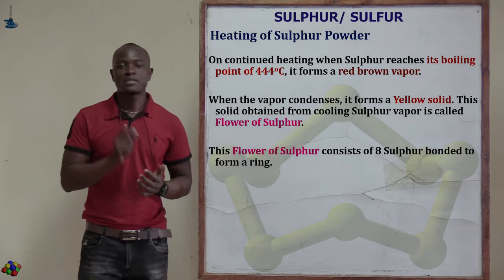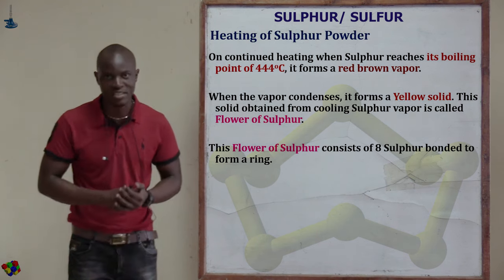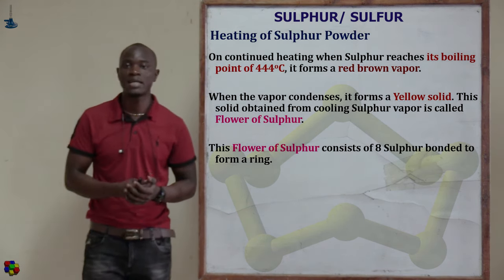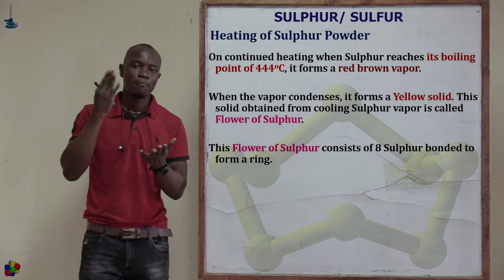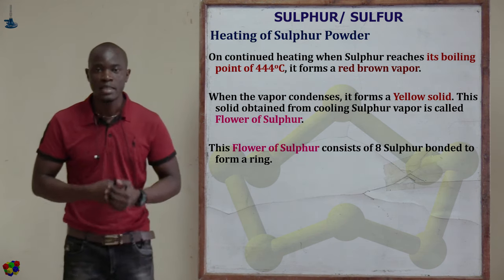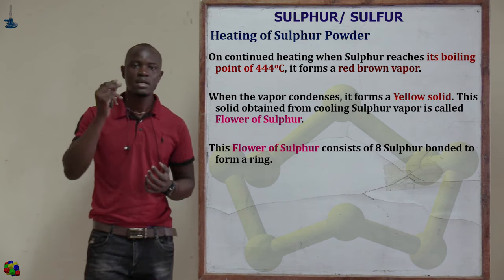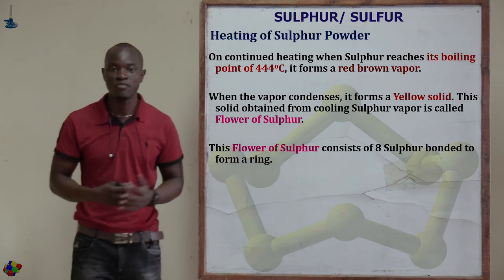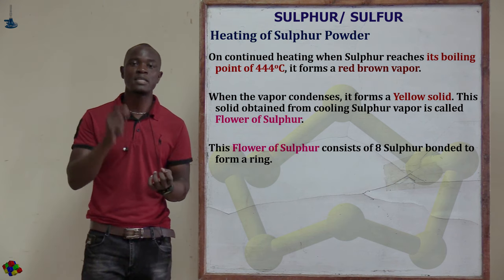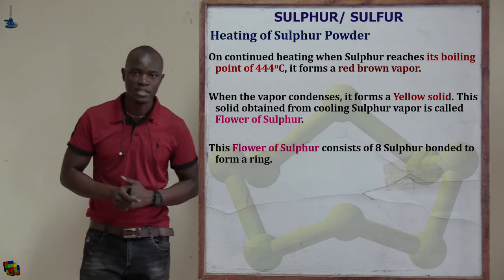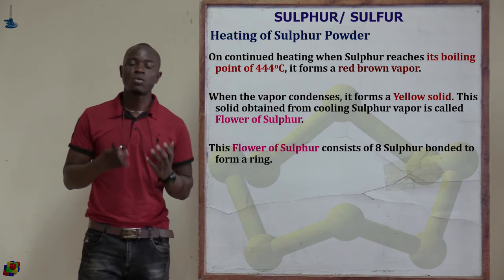If you continue heating the sulfur above 160 degrees Celsius, the liquid will darken further and the long chains will break to form very short chains as the liquid nears its boiling point. As sulfur approaches its boiling point of 444 degrees Celsius, the long chains begin to break gradually, and reddish-brown vapor of sulfur is formed.